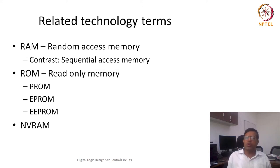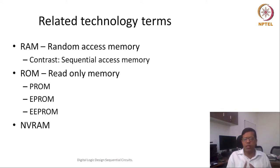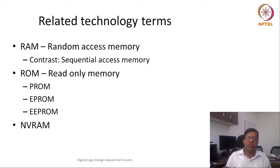Today, most memories are random access — be it hard disk, storage devices, or semiconductor memories. Most semiconductor memories are random access. However, optical drives and hard disk drives still have some kind of sequentiality that must be maintained.